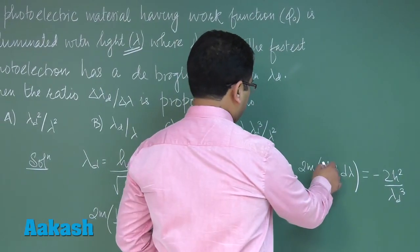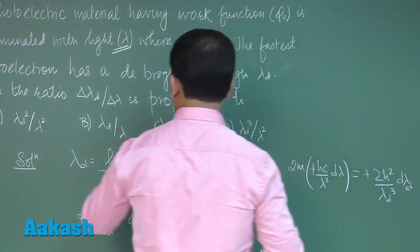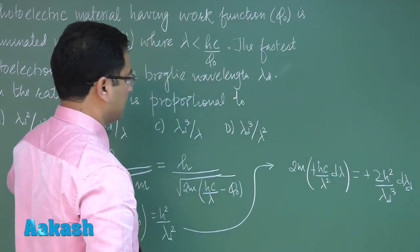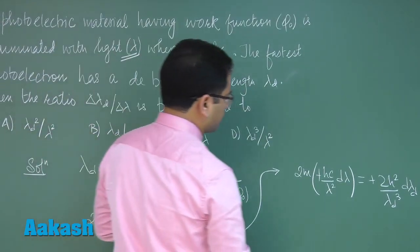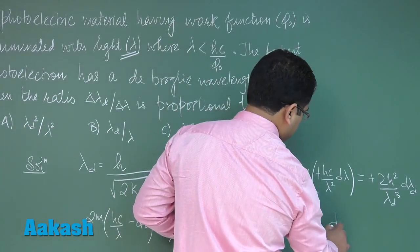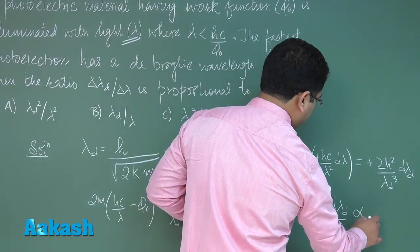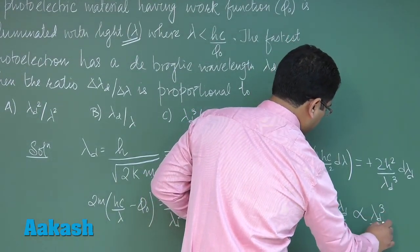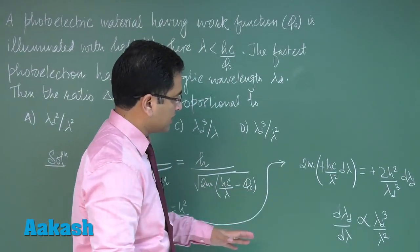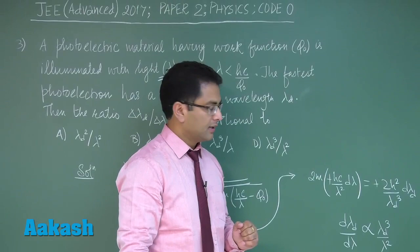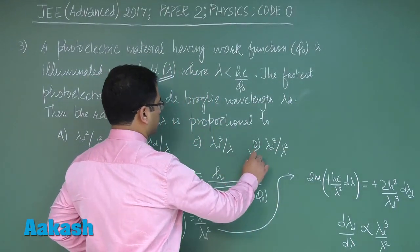And we're supposed to calculate the ratio of delta lambda d by delta lambda. So here, d lambda d by d lambda is directly proportional to lambda d cubed by lambda squared, because the other parameters apart from this are all constant. So the correct option according to this would be option number D.